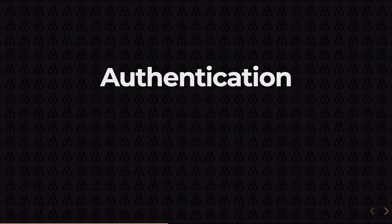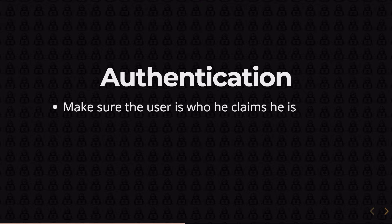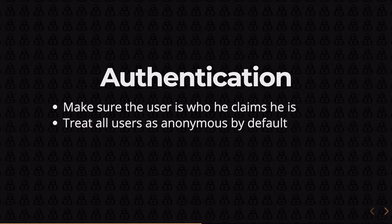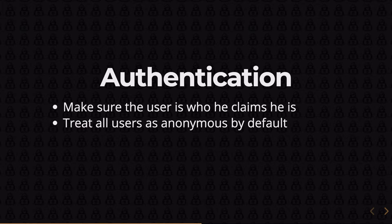Starting with user access — it consists of authentication. In authentication, you have to make sure the user is who the user claims he or she is. You have to treat all users as anonymous by default. Anonymous is basically the lowest level of trust you can have on any user, so your application by default should have lowest level of trust or no trust at all on any user submission, input, or action.